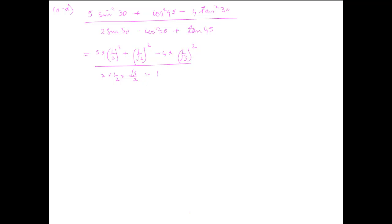2 times sin 30 cos 30 plus tan 45 which is 1. Now simplifying this one by one, we'll get 5 by 4 plus 1 by 2 minus 4 by 3 upon